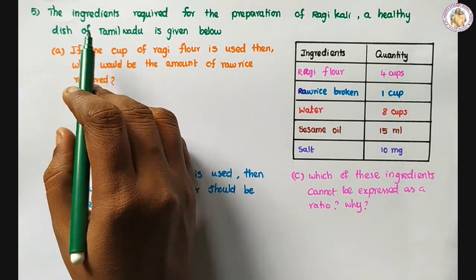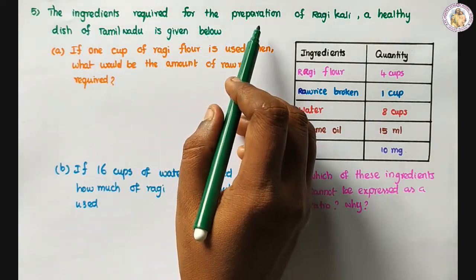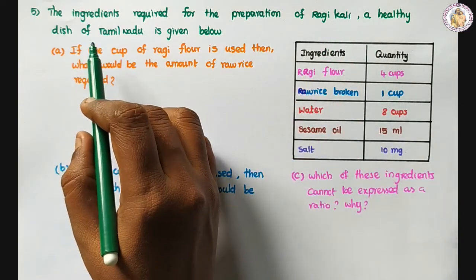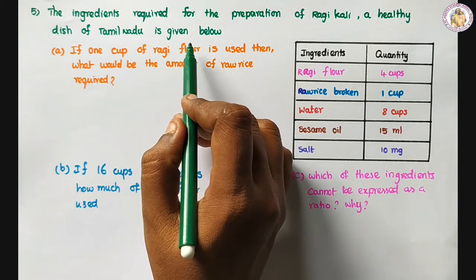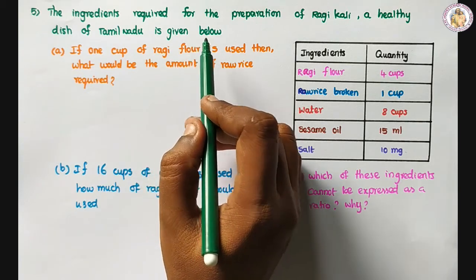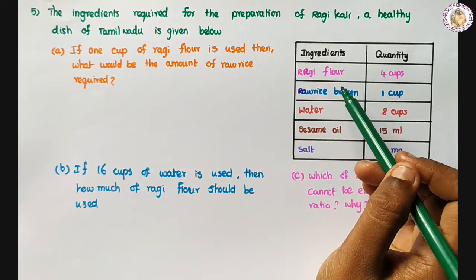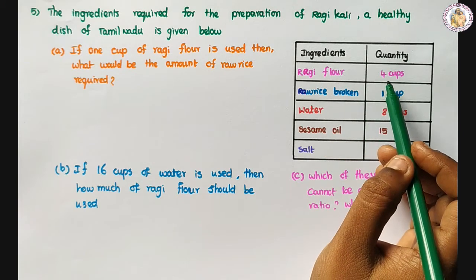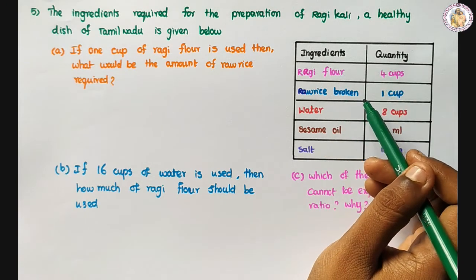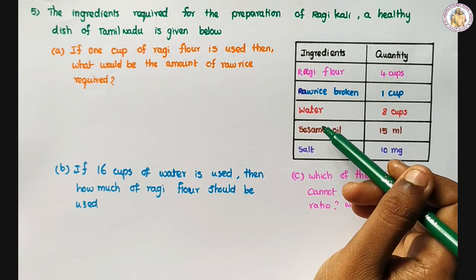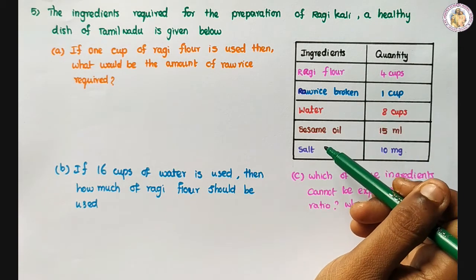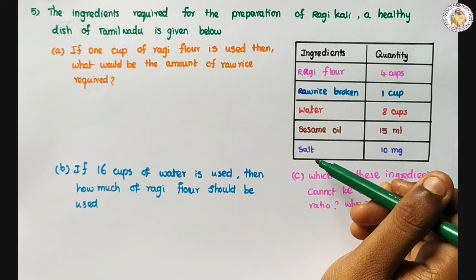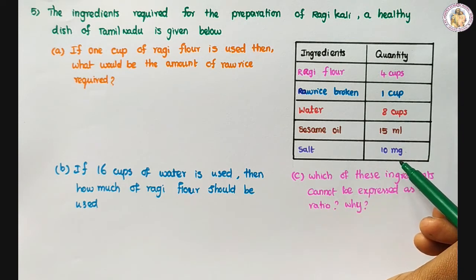Fifth question: the ingredients required for the preparation of ragi kali, a healthy dish of Tamil Nadu, are given below. Ragi flour: 4 cups, raw rice broken: 1 cup, water: 8 cups, sesame oil: 15 ml, salt: 10 mg.